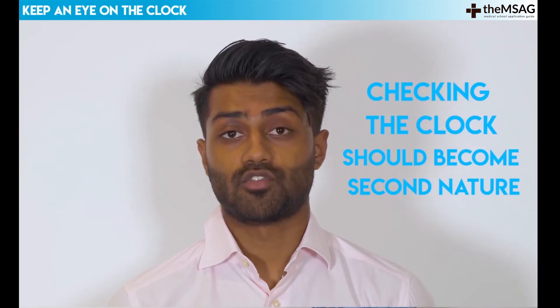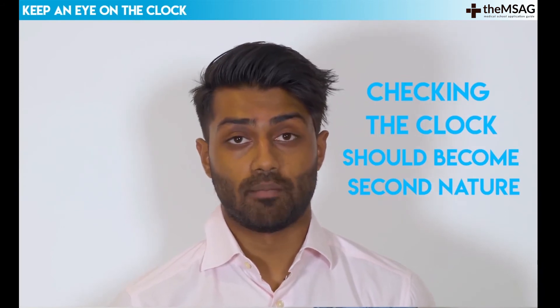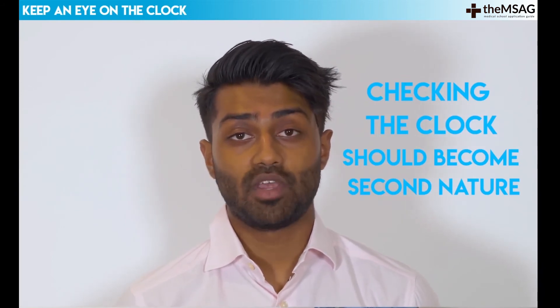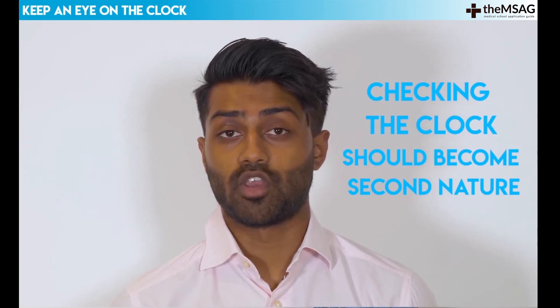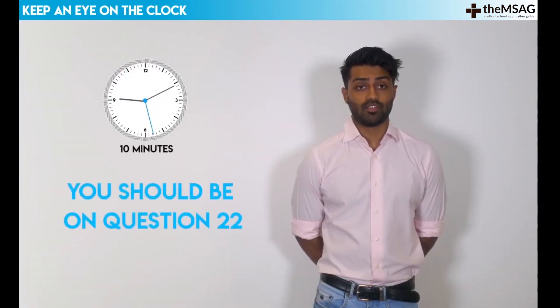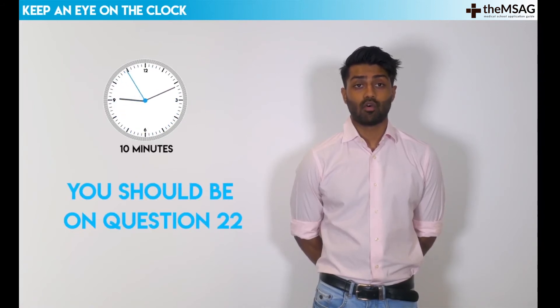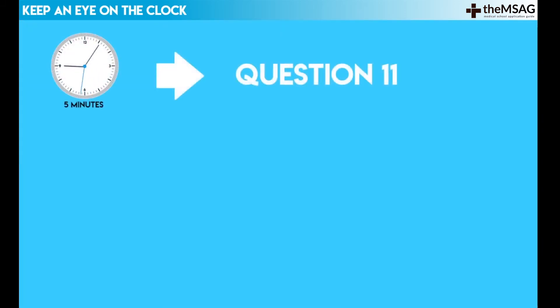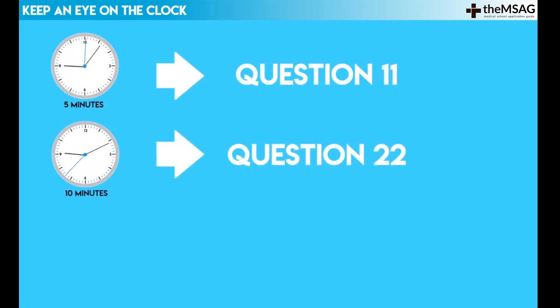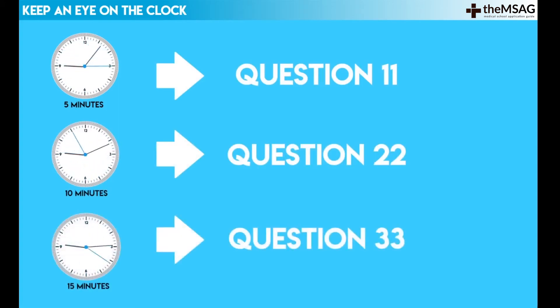As there are 44 questions to answer in 21 minutes, it's important to know how many questions you should have completed when you're at least halfway. At around 10 minutes, you should be on question number 22. This will indicate whether you're on track or need to speed up. You could also split this into quarters: at about 5 minutes in, you should be on question 11; at 10 minutes in, question 22; and at 15 minutes in, question 33.